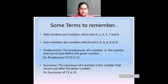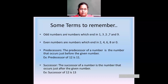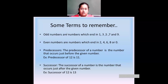Some terms you've studied in third standard. First, odd numbers. Odd numbers are numbers which end in one, three, five, seven, or nine. So the numbers whose one's place has one, three, five, seven, or nine are called odd numbers. For example: 99 is an odd number, 109 is an odd number, 101 is an odd number, and 995 is an odd number.